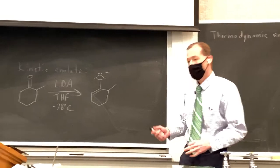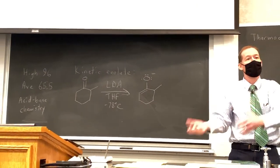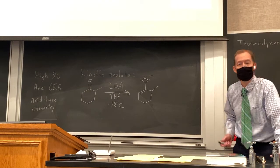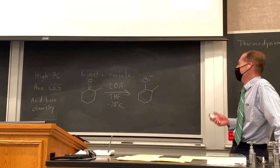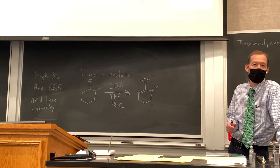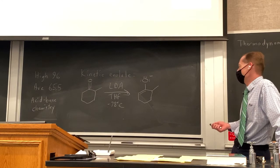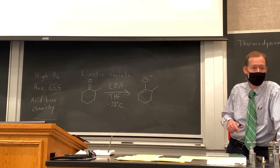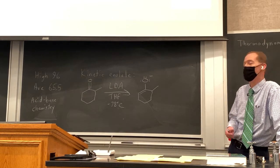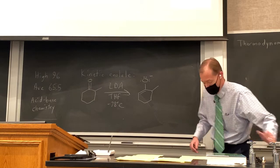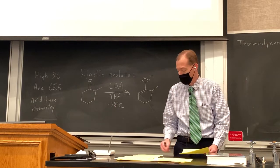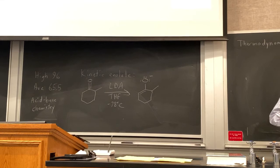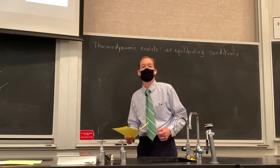On Monday we introduced the concept of kinetic enolates versus thermodynamic enolates — less substituted versus more substituted. To make a kinetic enolate, we need a very strong base that's going to irreversibly deprotonate our ketone. LDA is the base of choice. We need a polar aprotic solvent — THF is the most common. And we need low temperature, minus 78°, to suppress the ability of enolates to equilibrate.